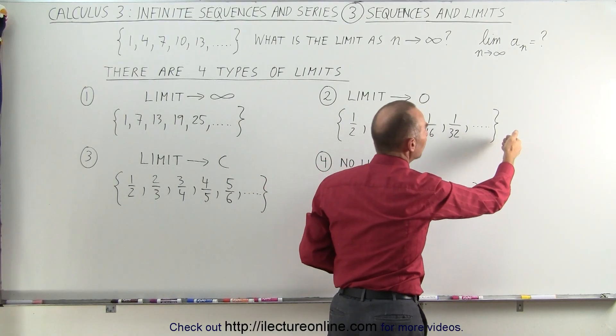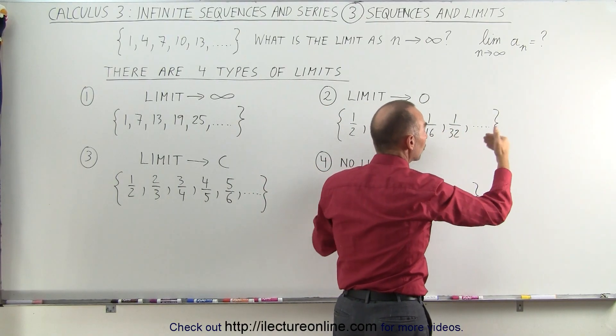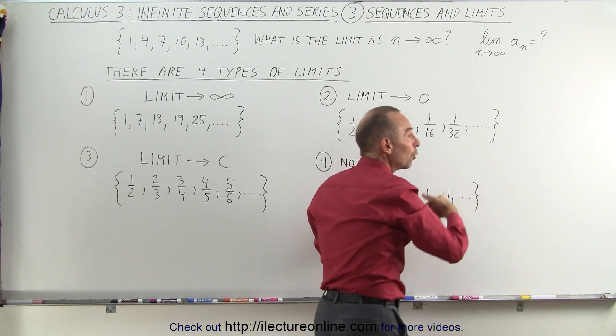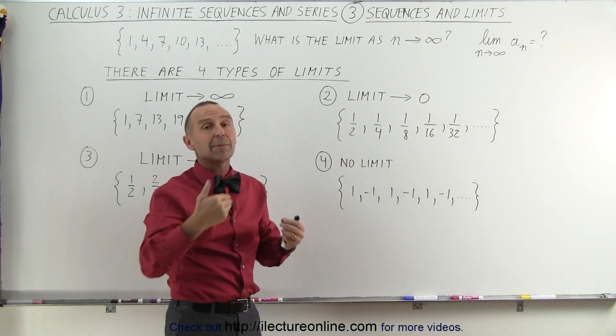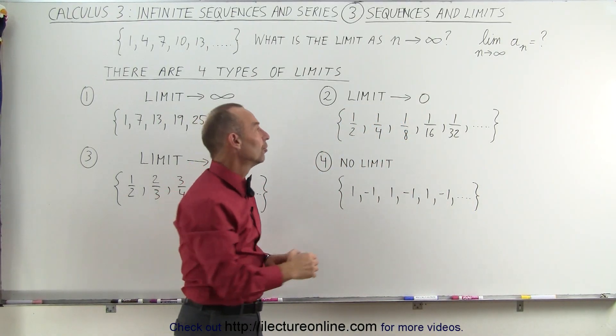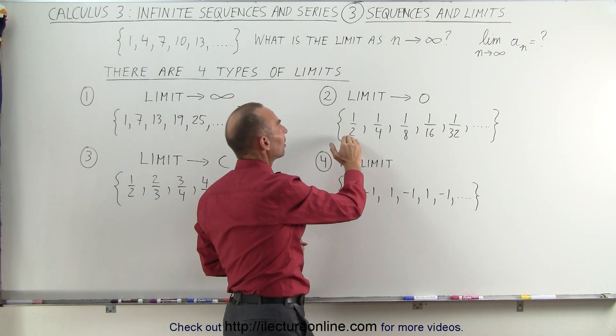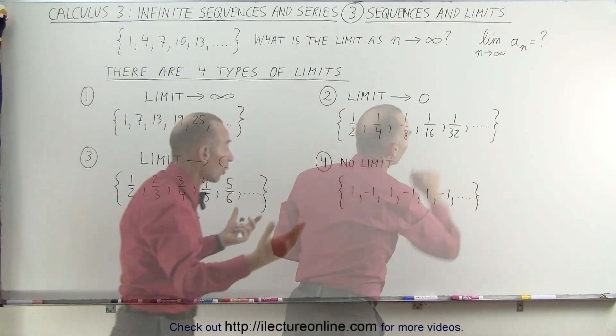If this keeps going forever, you can see that the bottom will get larger and larger, and in the limit, the denominator will go to infinity. One divided by infinity is indeed zero, so you can safely say that in this case, the limit of this sequence is zero.